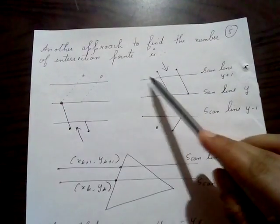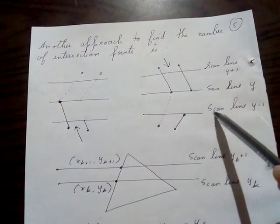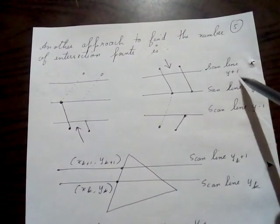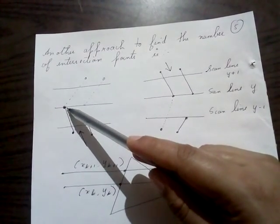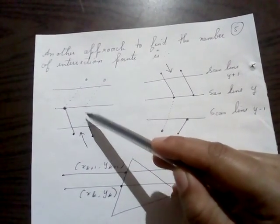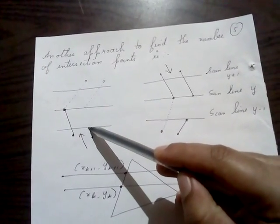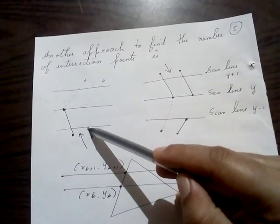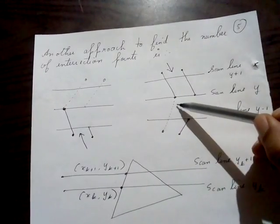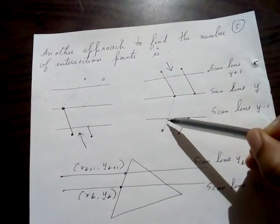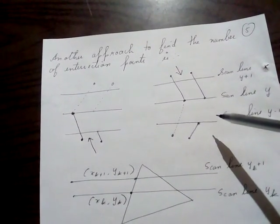There is one more approach to determine the number of intersection points. Given scan lines y+1, y, and y-1, when traversing an edge and decrementing the y-value from y to y-1, that point should be considered as only one intersection point. This decrement-based approach can also be used, though the previously described monotonic y-traversal method is more commonly used.